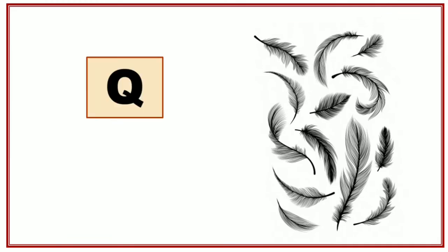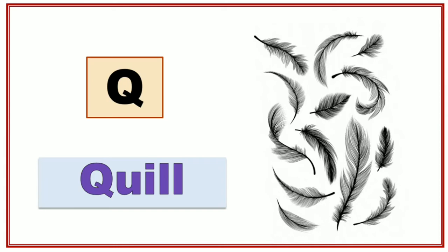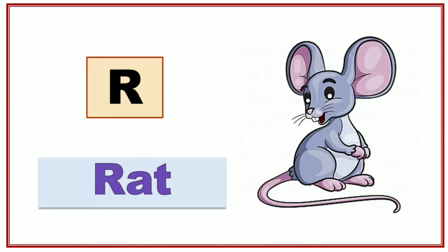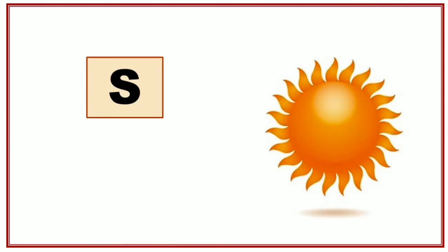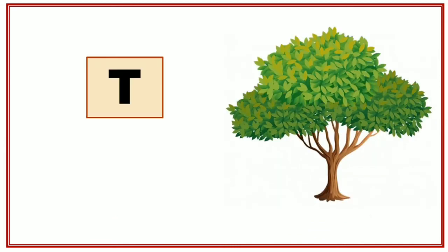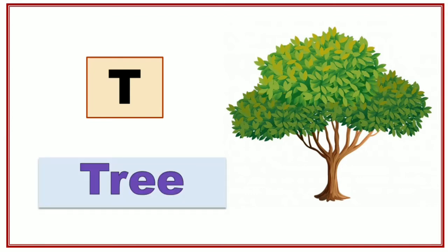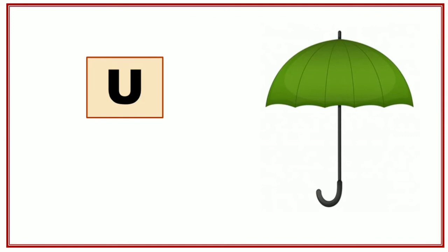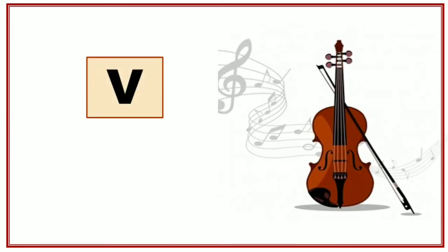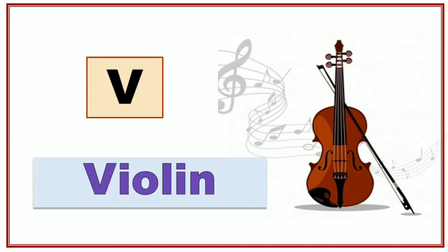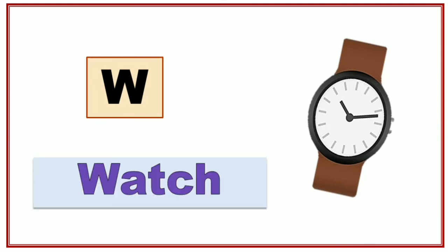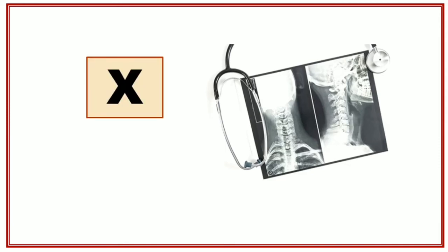Q for Wheel. R for Rat. T for Moon T for Tree. U for Umbrella.